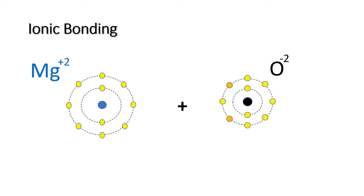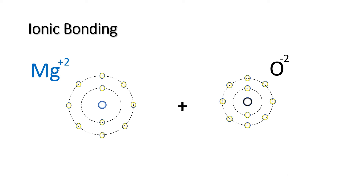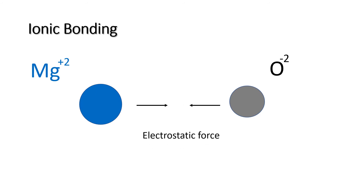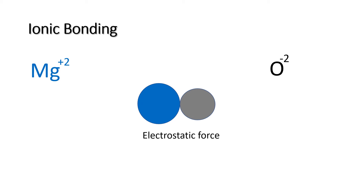When we say ionic bonding, these two will bond due to their difference in charges. Due to the octet rule, these two elements become stable — magnesium now has 8 electrons at the outermost energy level, and oxide also has 8 electrons at the outermost energy level. These two become stable elements. The attraction between them is due to electrostatic force, the force that causes attraction between two elements with opposite charges. Therefore, magnesium and oxide will bond, and that is what we call ionic bonding.